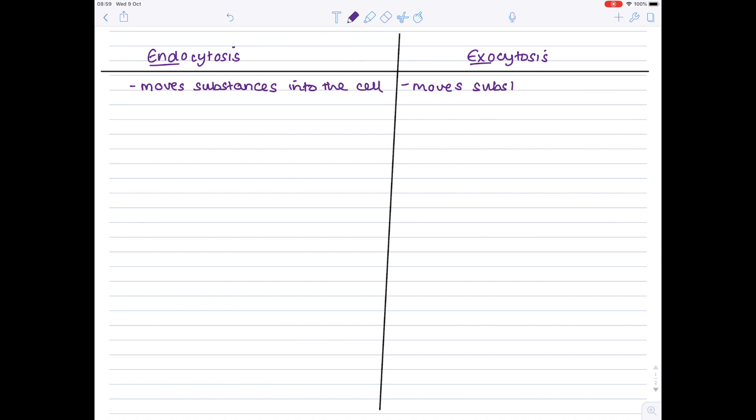So let's get into the nitty gritty of what exocytosis and endocytosis are. So endocytosis - notice the only difference in the words is at the beginning, endo versus exo. Endo is all about moving substances into the cell, whereas exocytosis moves substances out of the cell. And these are large substances.